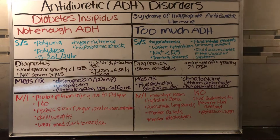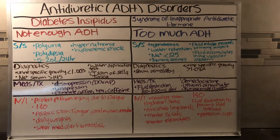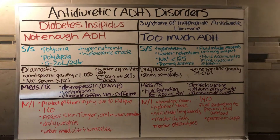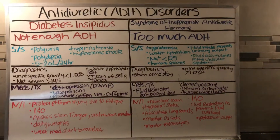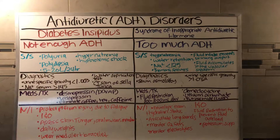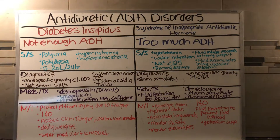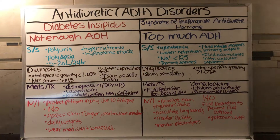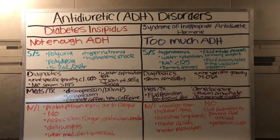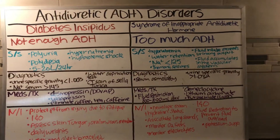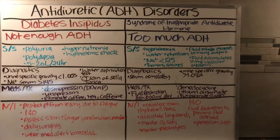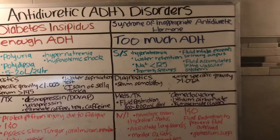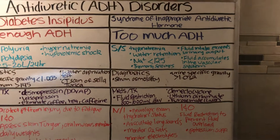For this video I'm going to talk about the antidiuretic hormone disorders. ADH is secreted from the posterior pituitary gland. It is antidiuretic, meaning it's against diuresis — it concentrates the urine so it makes sure that you don't pee too much. The two disorders are diabetes insipidus and the syndrome of inappropriate antidiuretic hormone.